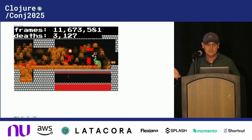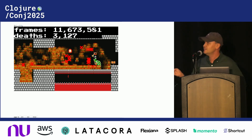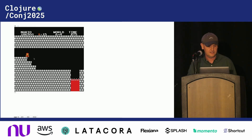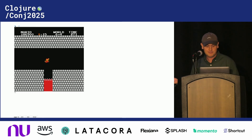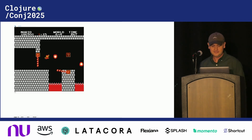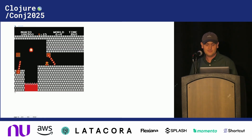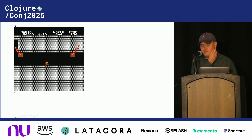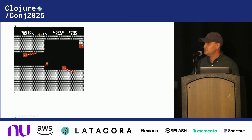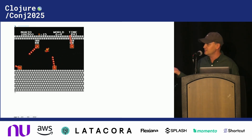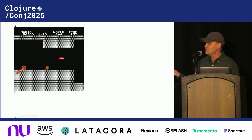It looks like we found a solution — it only took 11 million Nintendo frames and 3,000 Marios. Let's look at our solution. Here goes Mario. You can see Mario embodies the philosophy that it's better to be lucky than good, because we all saw he has no idea what he's doing — this just happens to be the one timeline where everything worked.